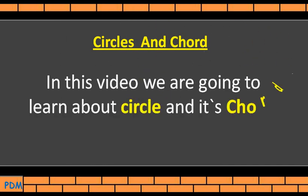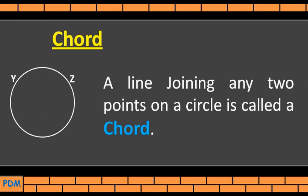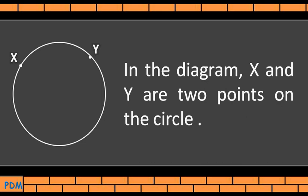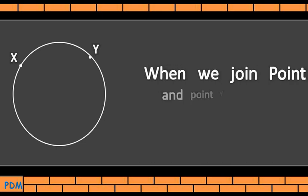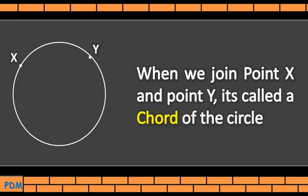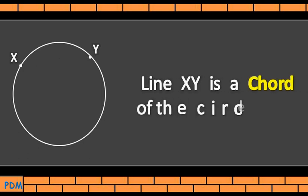In this video we are going to learn about circle and its chord. A line joining any two points on a circle is called a chord. In the diagram, X and Y are the two points on the circle. When we join point X and point Y, it is called a chord of the circle. Line XY is a chord of the circle.